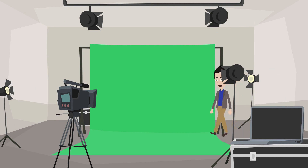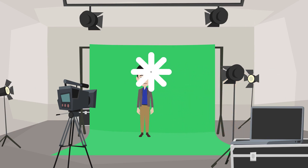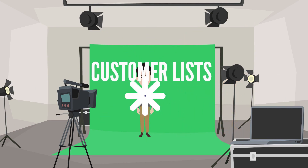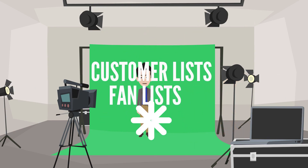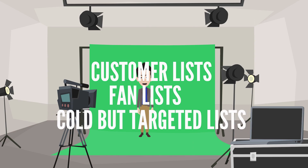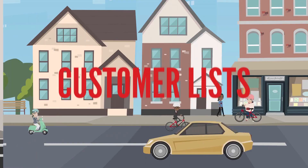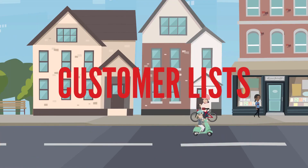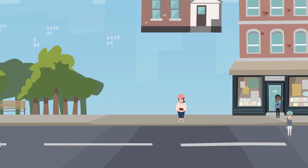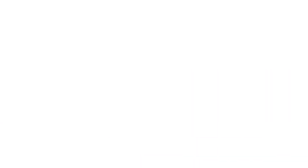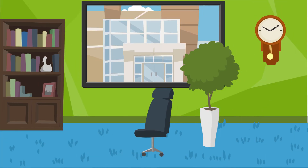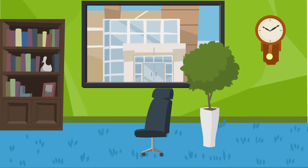So we're going to talk about three kinds of lists: customer lists, fan lists, and cold but targeted lists. Let's get right to the customer list. For starters, you've got to be emailing them at least monthly with what's going on over at your company.